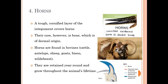Horns are found in bovines, cattle, antelope, sheep, goats, bisons, etc. They are retained year-round and grow throughout the animal's life. Horns have two parts: the core bone, which is the internal bone — part of the skull — and on top of that a vascularized dermal layer, followed by the external epidermal keratinized layer that gives the horn its external structure. Horns are never shed; they are retained throughout the life of the animal.